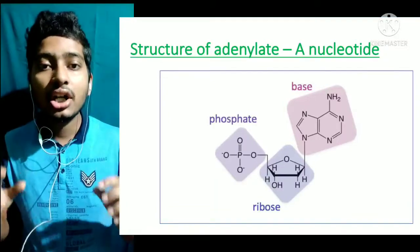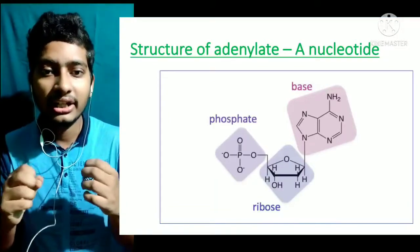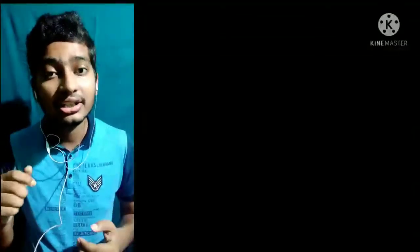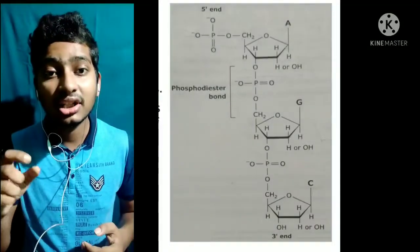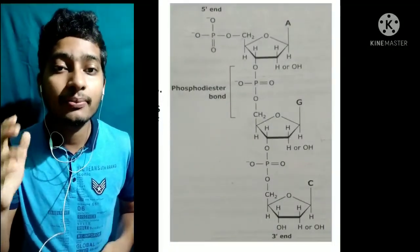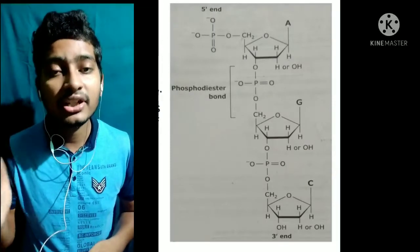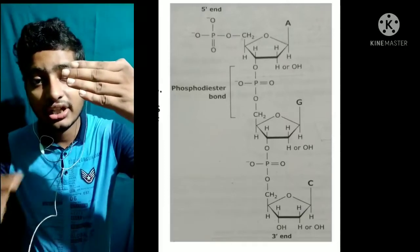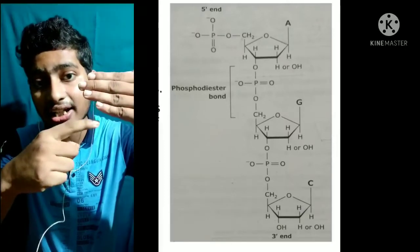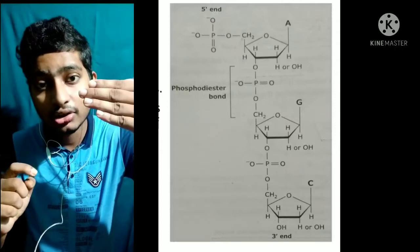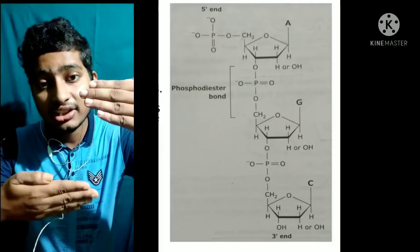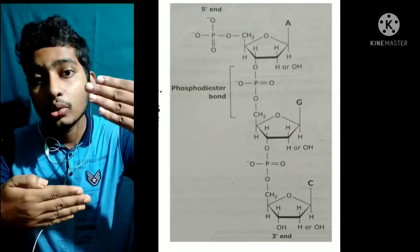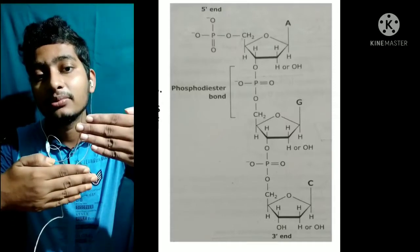Nucleotides join together by the formation of phosphodiester bonds. यह phosphodiester bond, एक nucleotide के 3rd number carbon के hydroxyl group और दूसरे nucleotide के 5th number carbon पर present phosphate ion के बीच बनता है। इस तरह phosphodiester bond का formation होता है।